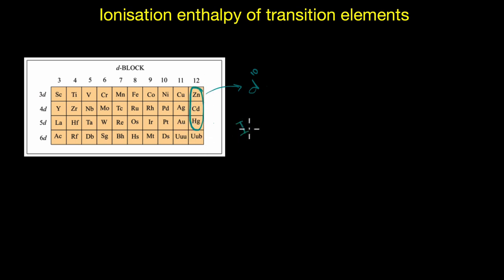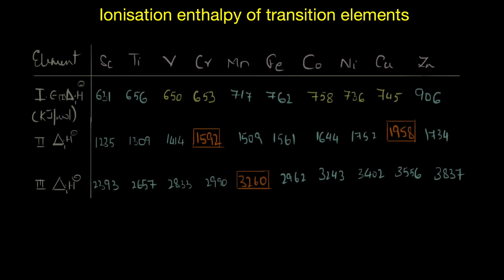The ionization enthalpies of these elements is very high. Let's now look at the trends in the second and third ionization enthalpies. Here again we can notice a couple of interesting things. When you compare the first ionization enthalpies with the second and third, you can see that the magnitude of increase in the values of second and third ionization enthalpies is much larger than the first ionization enthalpies.